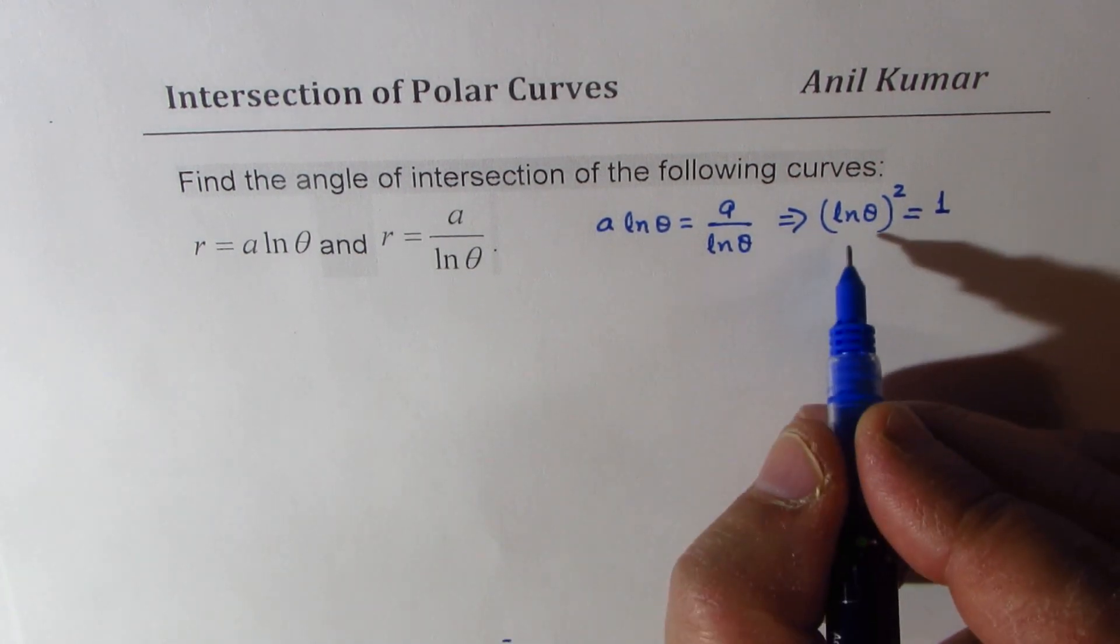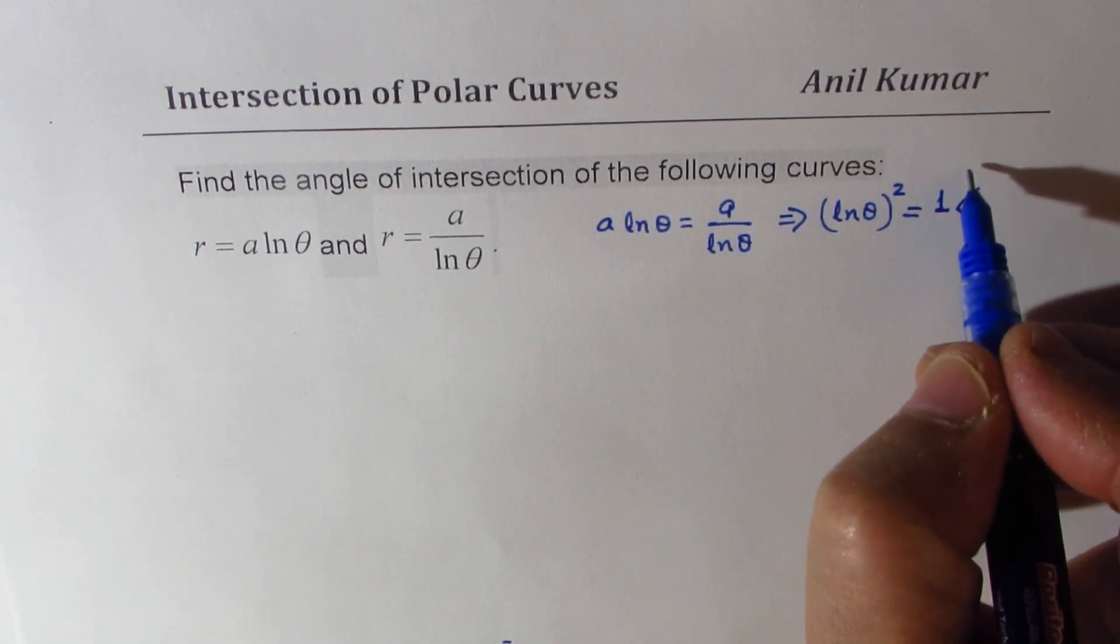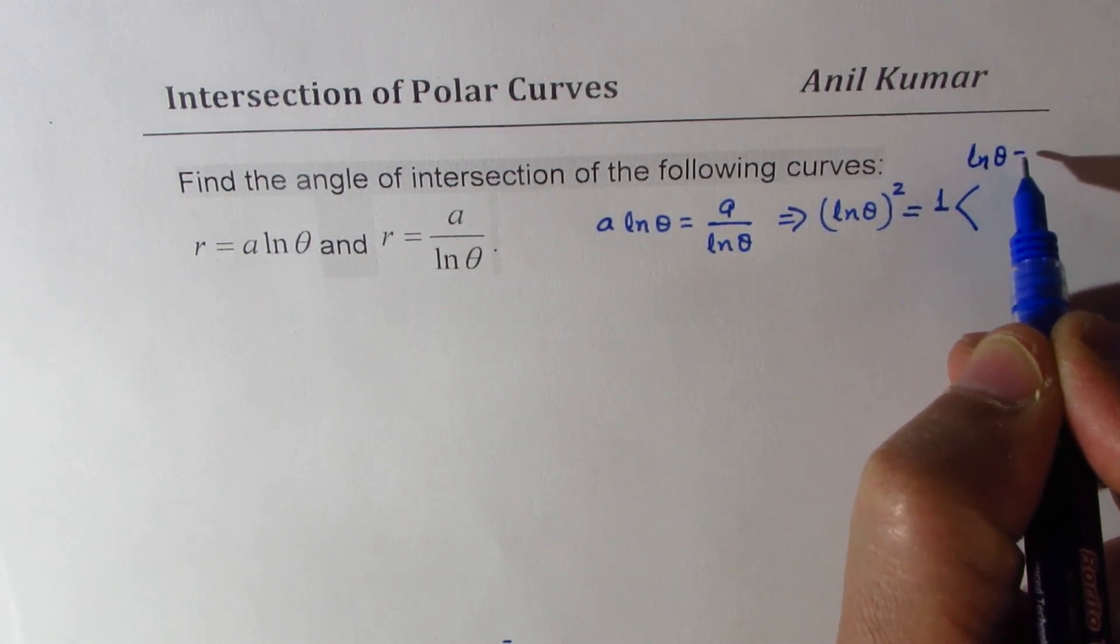Now so that clearly indicates that ln theta is 1. So we get two things from here: one is that ln theta is equal to 1.